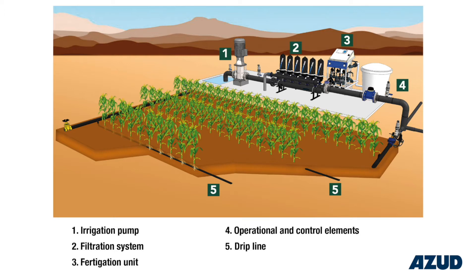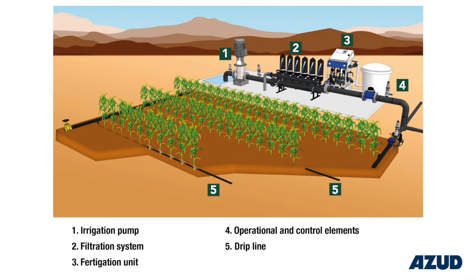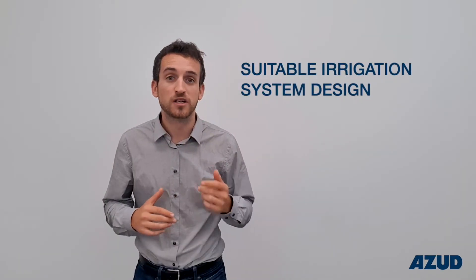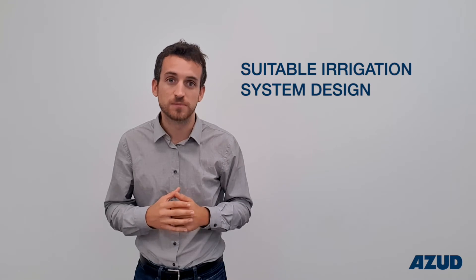The design should also include all those inspection points and elements for checking the operational conditions once the irrigation system is running.